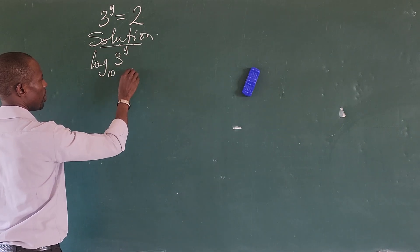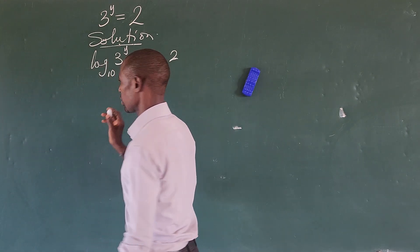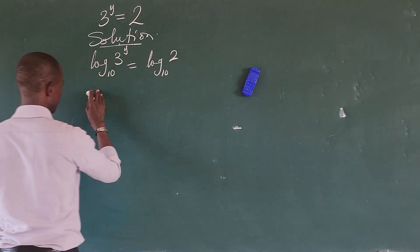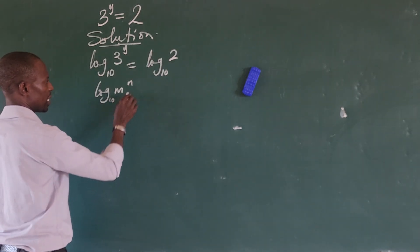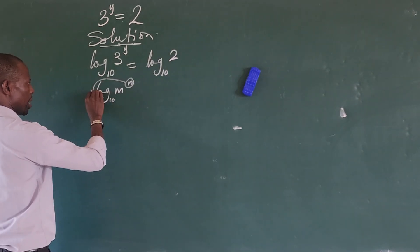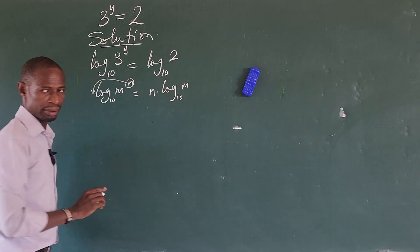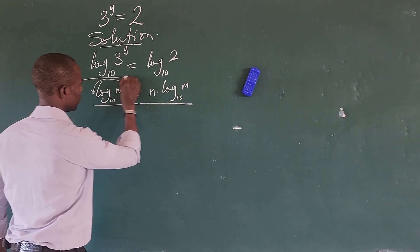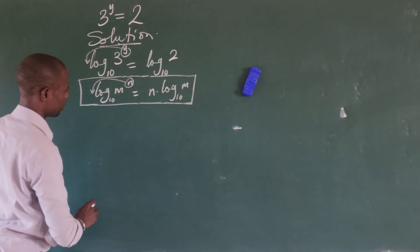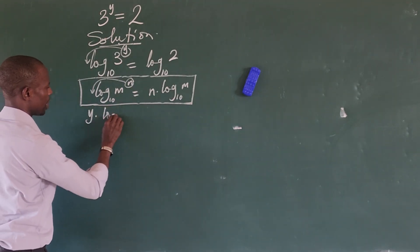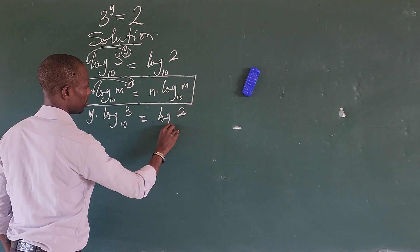Taking log base 10 of both sides, we'll have y on the left. According to the property of logarithm, if you have log of m to the power of n, you move the exponent down to give us n times log of m base 10. So we're going to apply this property here, moving y out in front, giving us y times log base 10 of 3 equals log base 10 of 2.